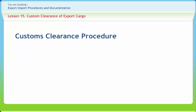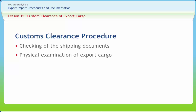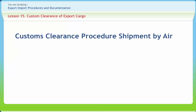The process of customs clearance of export shipments involves the following stages. During the checking of shipping documents, the CHA or exporter makes the actual booking of cargo with the airlines in advance and the carting order is obtained. Even the airway bill is also taken in advance of the arrival of the flight.